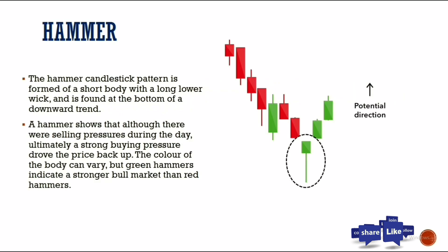The first pattern is the hammer. The hammer candlestick pattern is formed of a short body with a long lower wick, and it is found at the bottom of a downtrend. You can see red candles representing the market moving in a downtrend, and then this hammer forms, showing us the selling pressure during the day and the buyers coming in and pushing the price up.